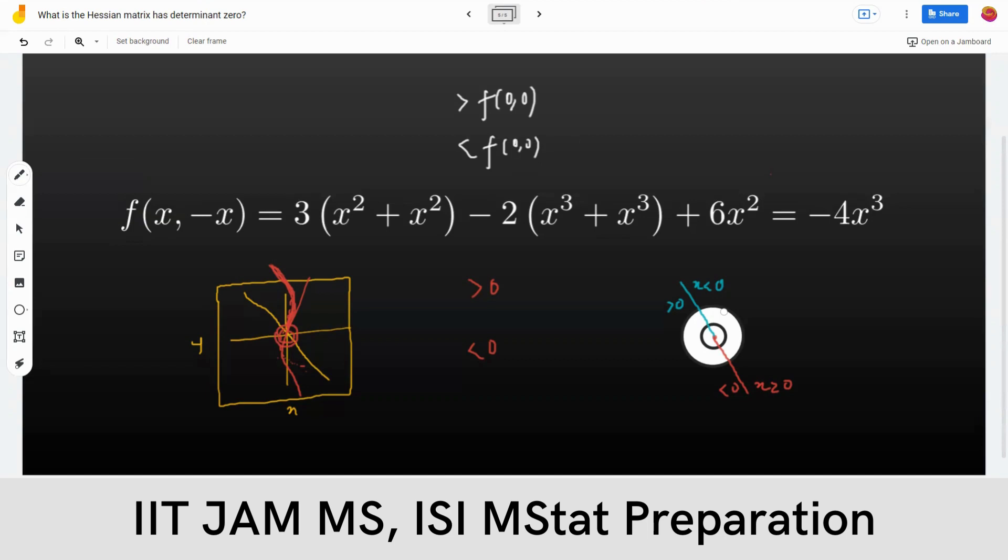So it cannot be a local maxima because local maxima contains an interval where it's entirely greater than that functional value, and similarly for local minima. So the critical point which is neither local minima nor local maxima is called a saddle point.